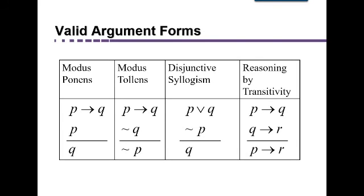This one, where we have P implies Q, but Q doesn't happen, therefore P couldn't have happened, is called modus tollens.